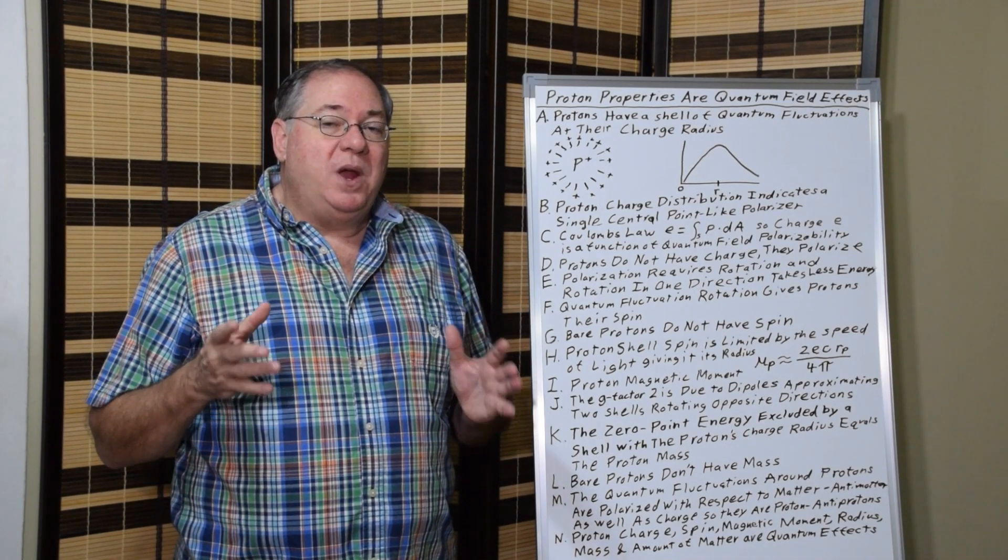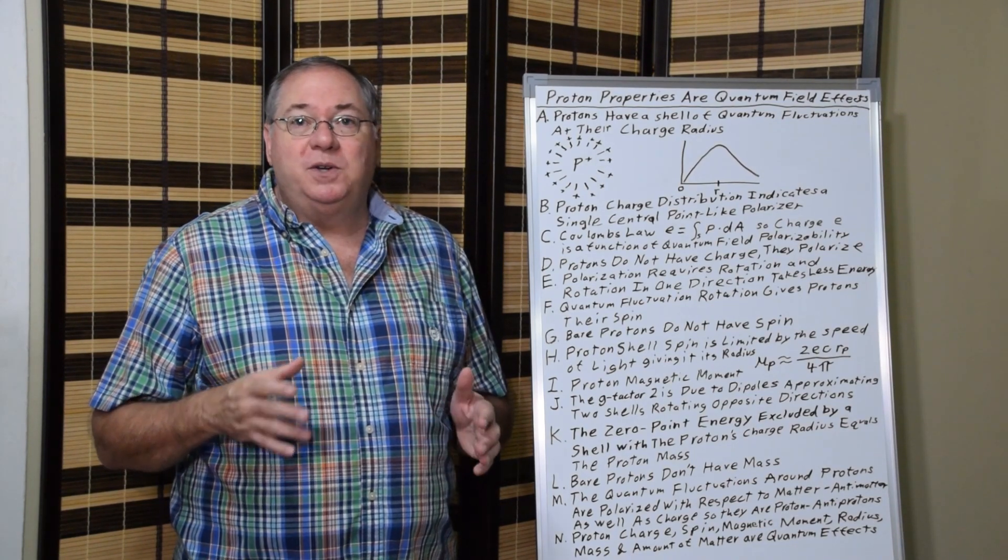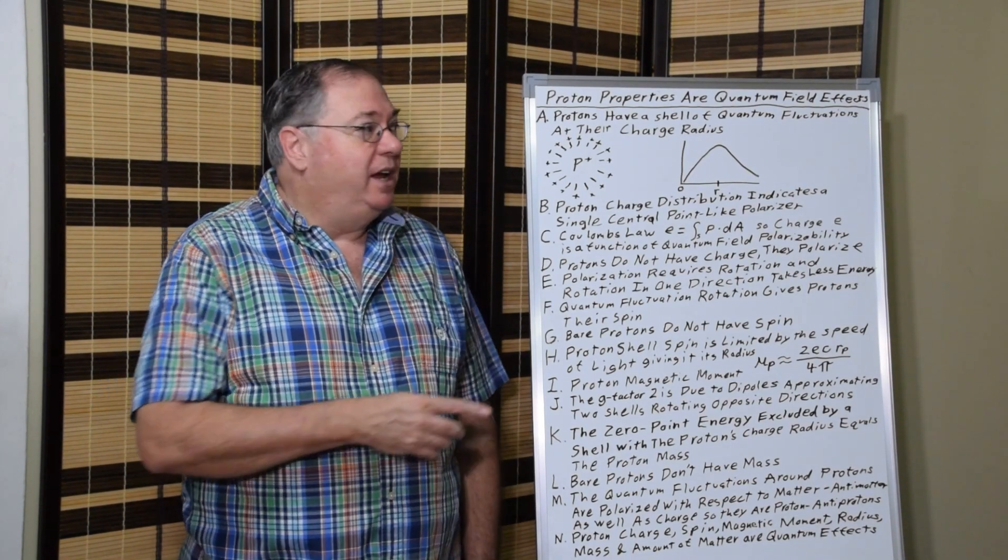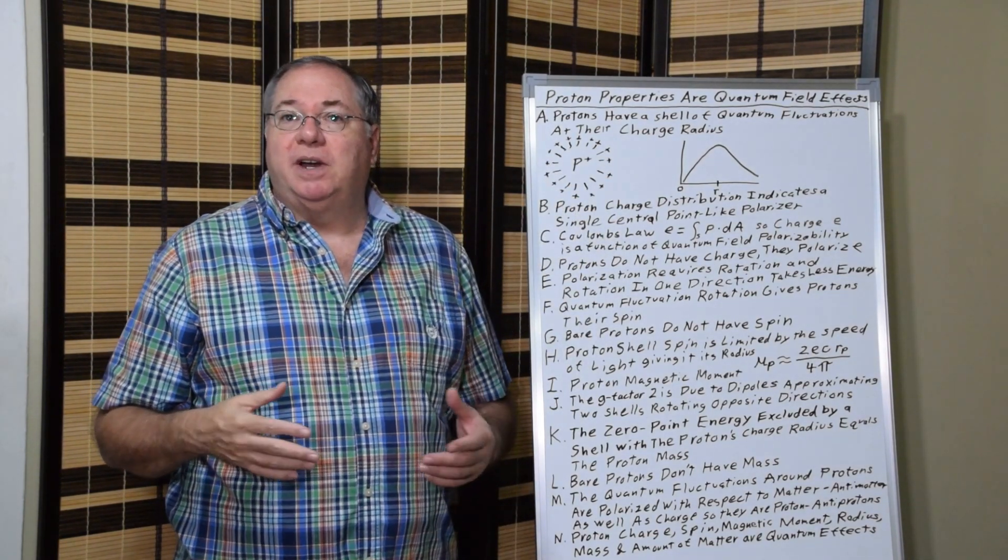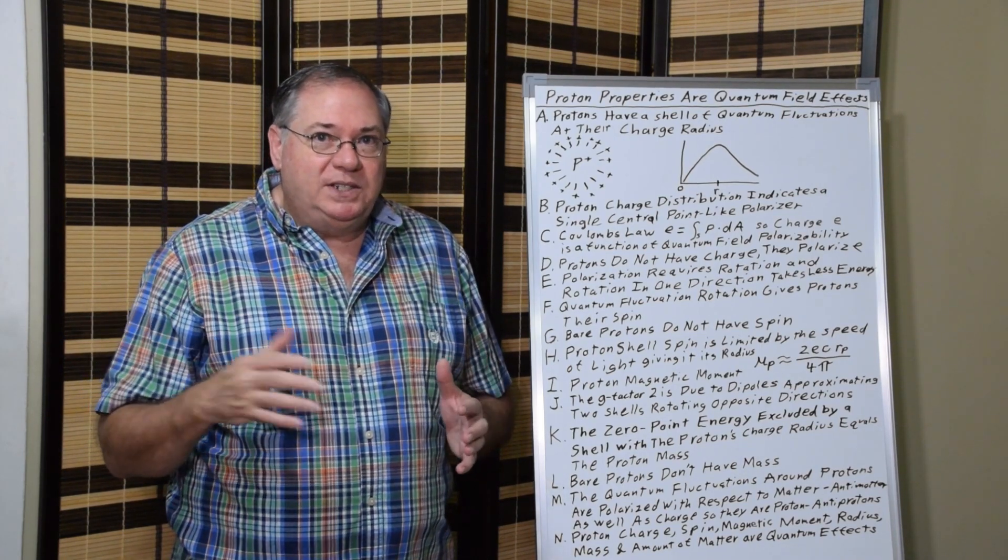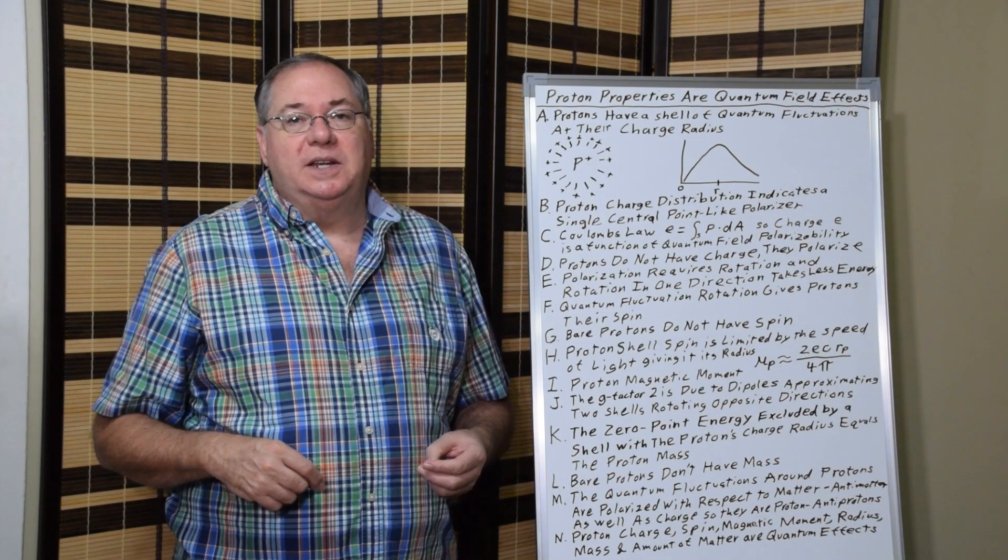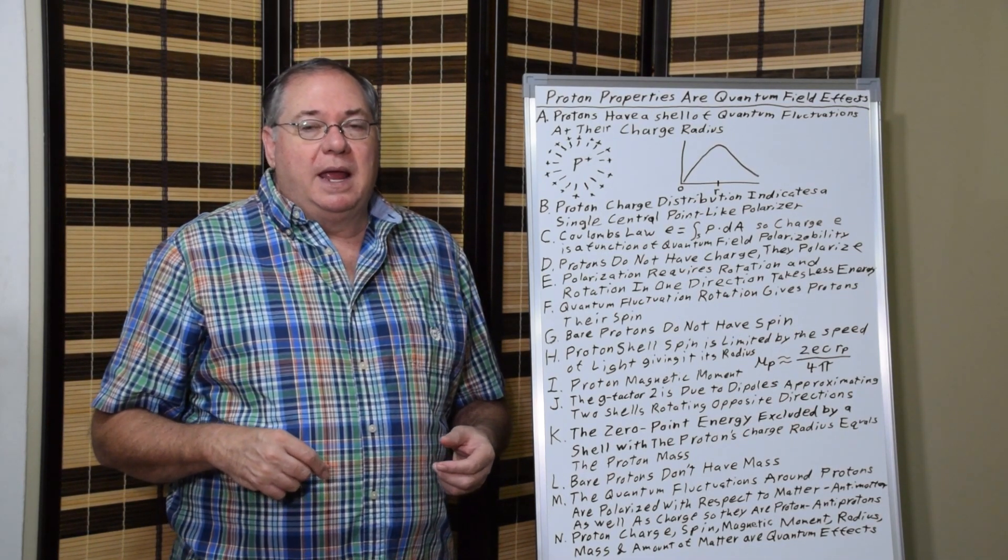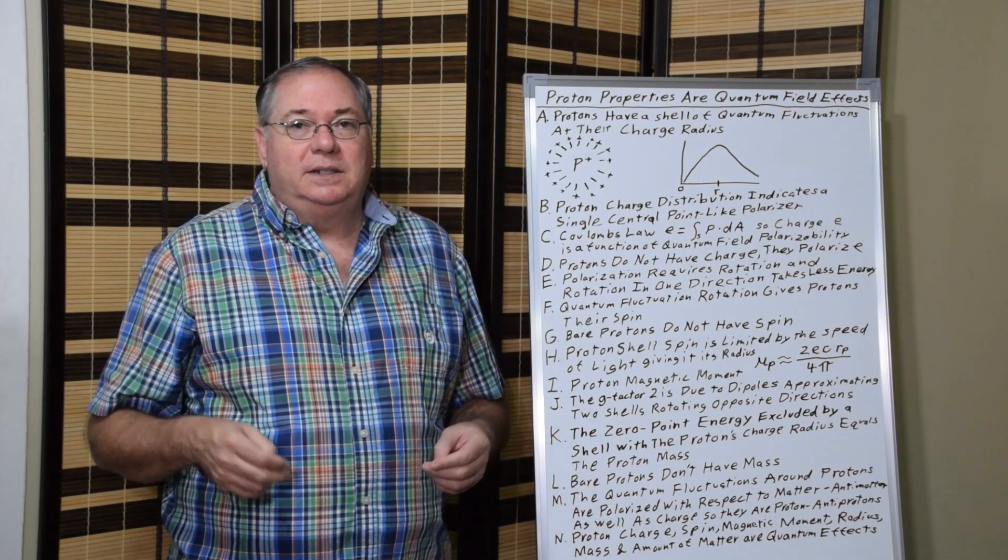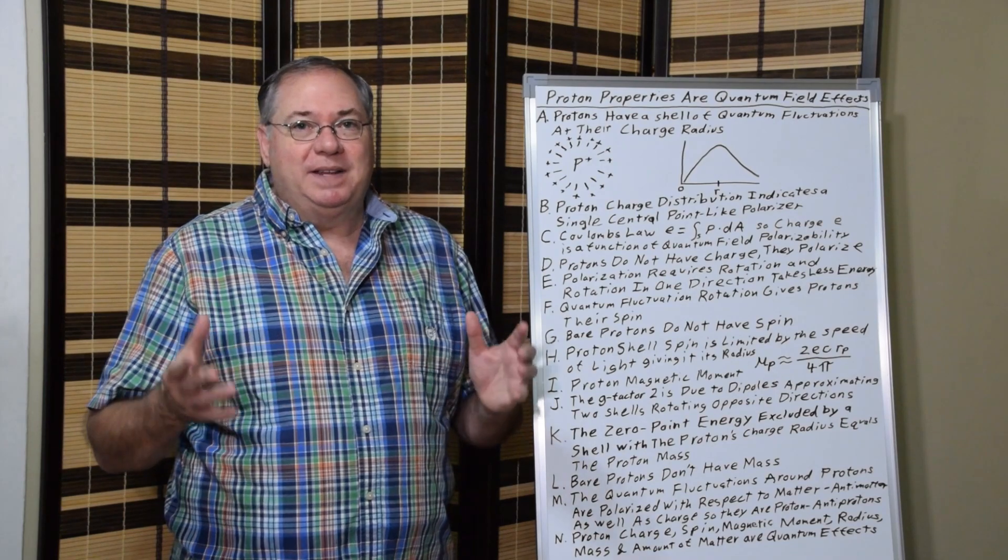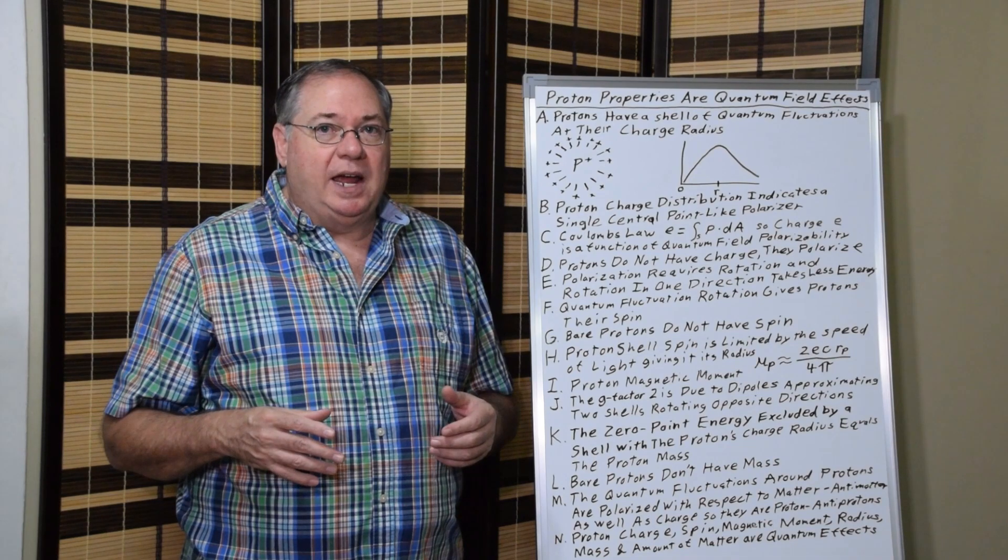And we also know from scattering experiments that a proton behaves like it has a shell of polarized dipoles at its charge radius. And that's what we scatter off of, or what particles and light scatter off of when they scatter off a proton. And Feynman came up with the term partons. He thought they had to be tens of thousands of little things that were being scattered off of to account for proton scattering.